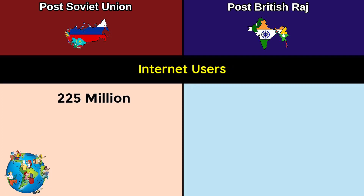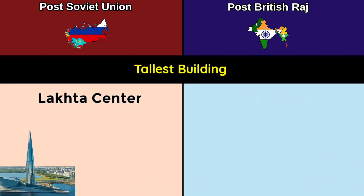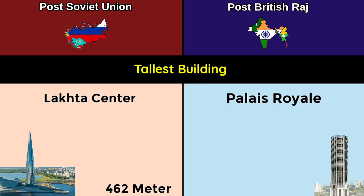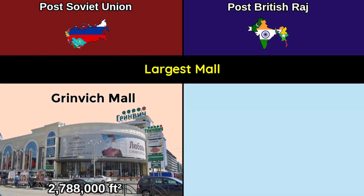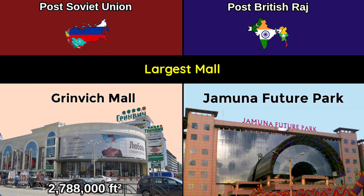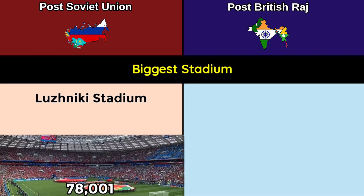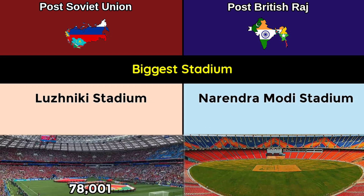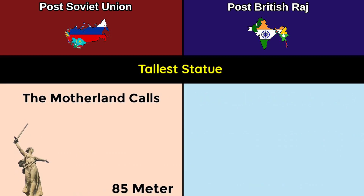Internet users: 225 million (74.5% of post-Soviet population) versus 1.13 billion (60% of post-British Raj population). Tallest building: Lakhta Center at 462 meters versus Palais Royale at 320 meters. Largest mall: Greenwich Mall at 2.78 million sq ft versus Jamuna Future Park at 4.1 million sq ft. Biggest stadium: Luzhniki Stadium at 78,001 capacity versus Narendra Modi Stadium at 132,000.